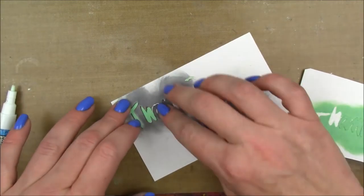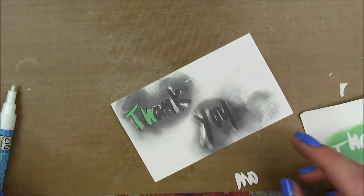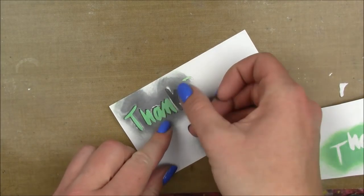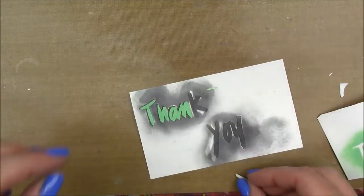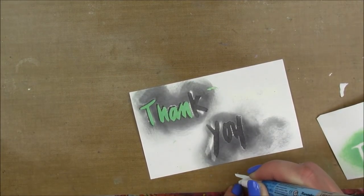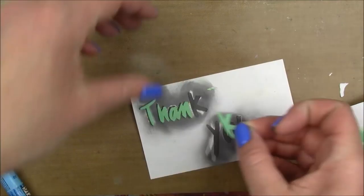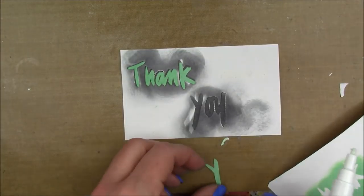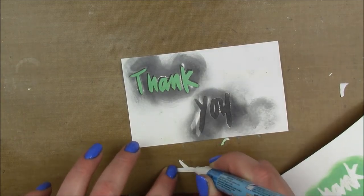I cut out two different cuttings of the same size and inked the first one with a gray distress ink and the second one with cracked pistachio. Then I'm just going to layer the cracked pistachio letters on top of the first layer but slightly offset so that gray peeks out like a little bit of a shadow.